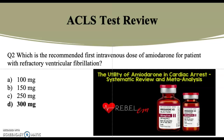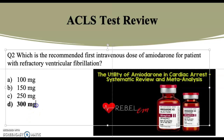Question 2: which is the recommended first intravenous dose of amiodarone for a patient with refractory ventricular fibrillation? A) 100 milligrams, B) 150 milligrams, C) 250 milligrams, D) 300 milligrams. D — as in David — is the correct answer: 300 milligrams.